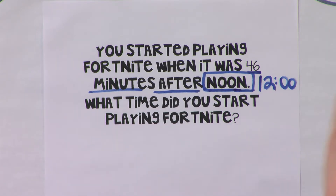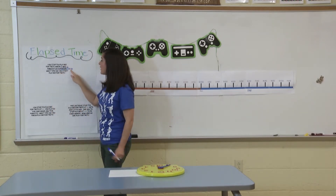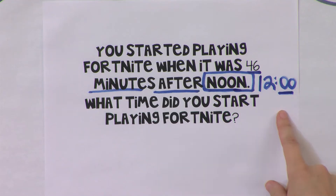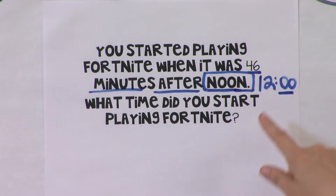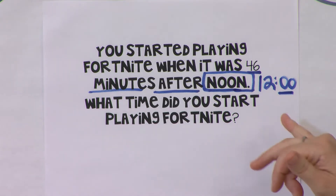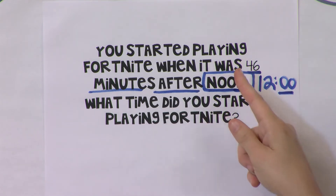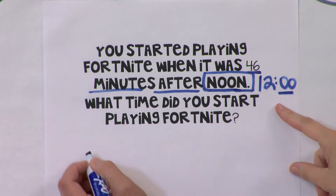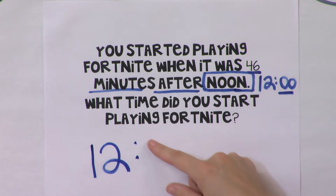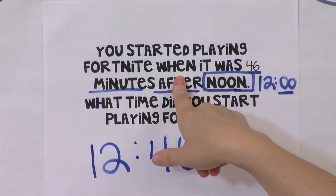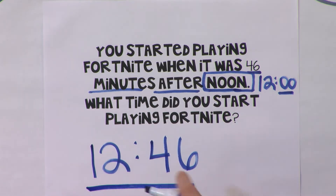This one I bet you can do in your head — you probably don't even need a tool. This is the start of a new hour, so if we just put 46 minutes on there, is our hour changing at all? No, because how many minutes do we need for the hour to change? 60, because there are 60 minutes in an hour. So we don't need to change our hour here, just our minutes. If it was 46 minutes after noon, then we would have 12, and then we write our colon and our minutes: 46. So the time you started playing was 12:46.